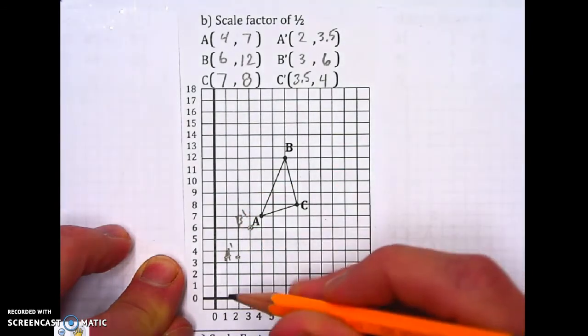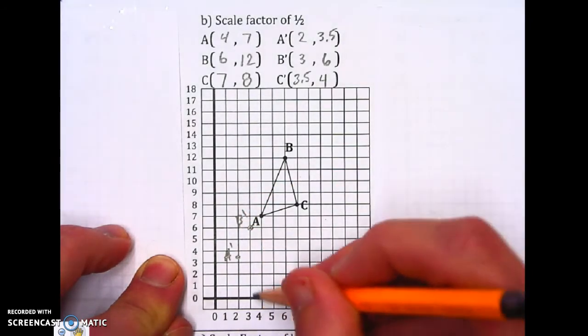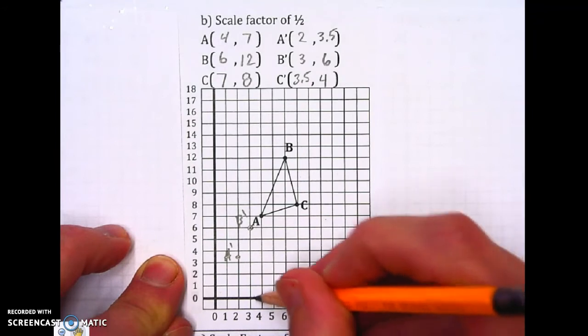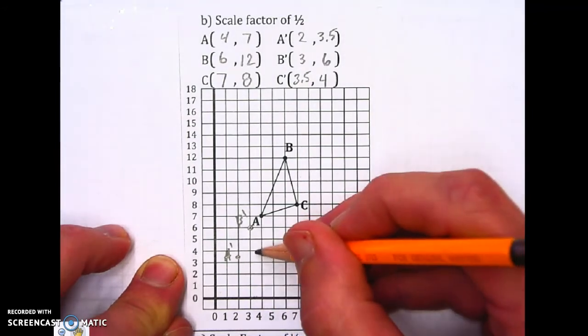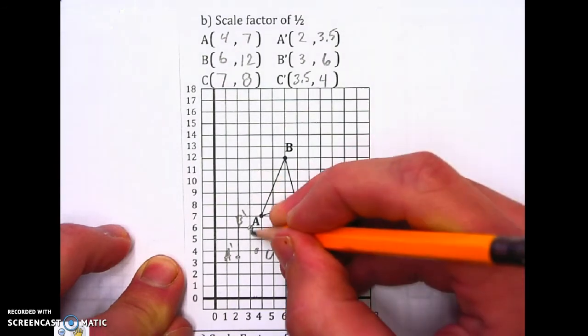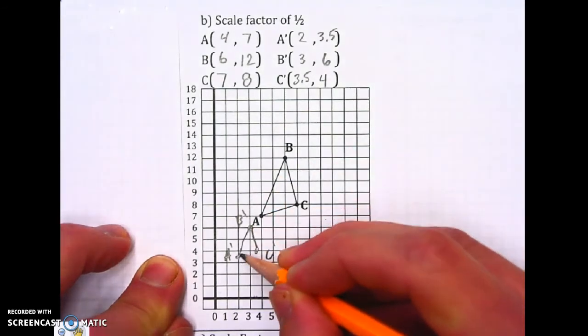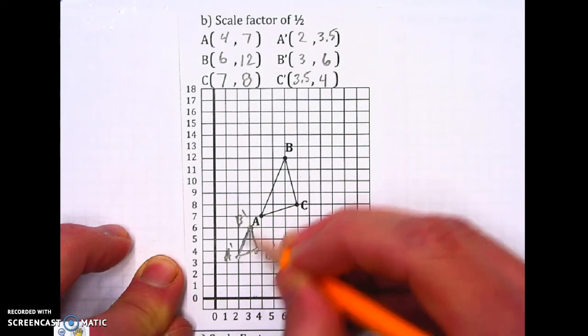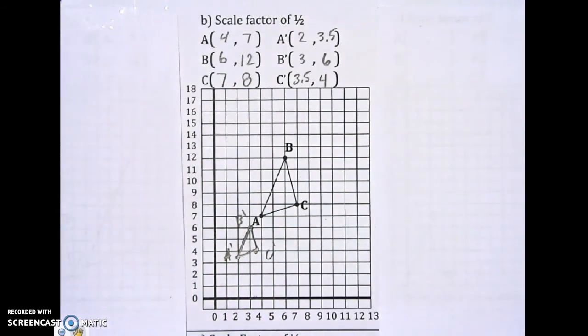And C prime. Over 3.5, 3 and a half, right here in the middle. And up to 4. C prime. And I'll connect it together. And we've got that thing dilated.